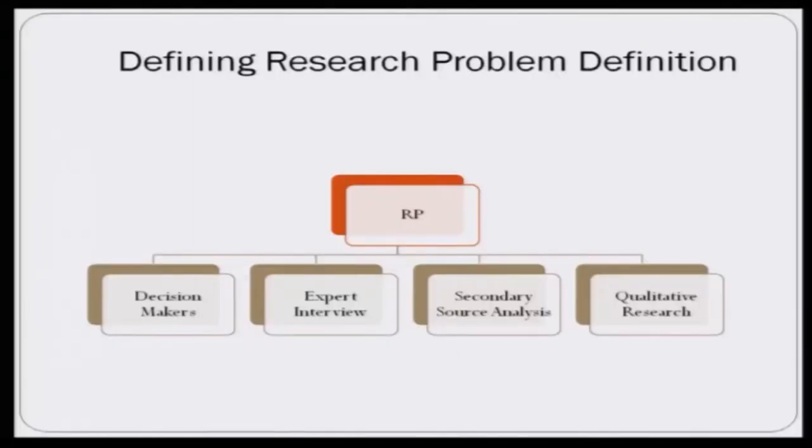Then you have secondary source analysis — you go into secondary research, look into the literature, and look into secondary databases to understand why this kind of issue occurs and what related factors are associated with it. Then you go into qualitative research where you can talk to customers of the company or other stakeholders, conducting different types of qualitative research to further clarify and come out with a very specific, clear-cut marketing research problem definition.